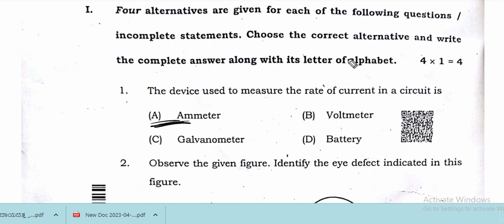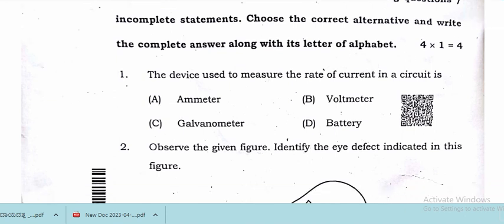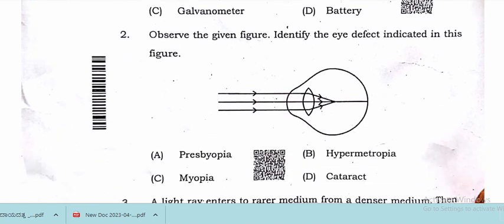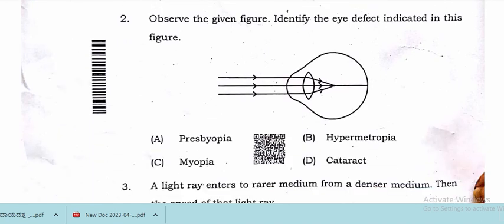Observe the given figure and identify the eye defect indicated. The eye defect in this figure is myopia. Myopia is the eye defect here. We move on to the next question.